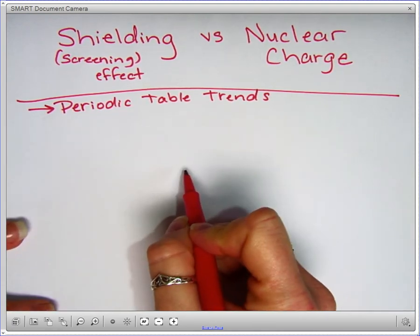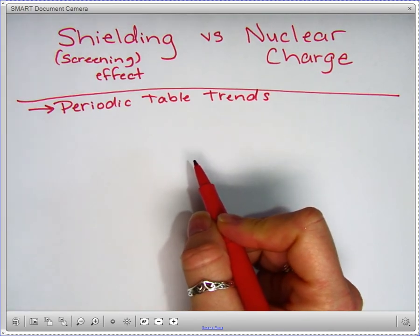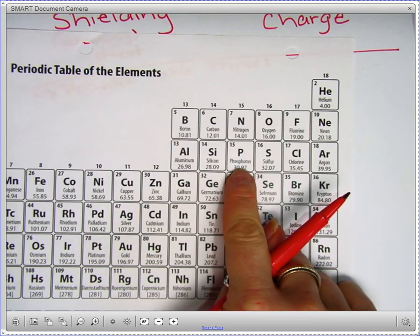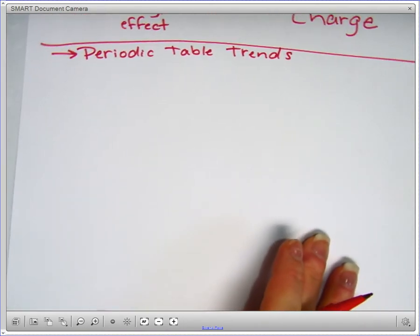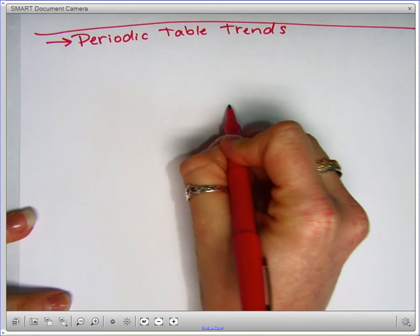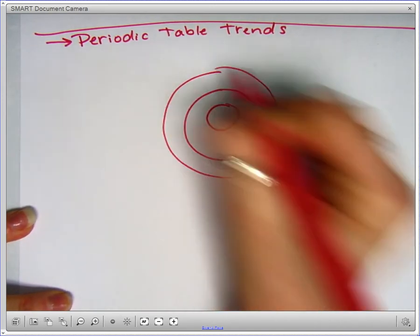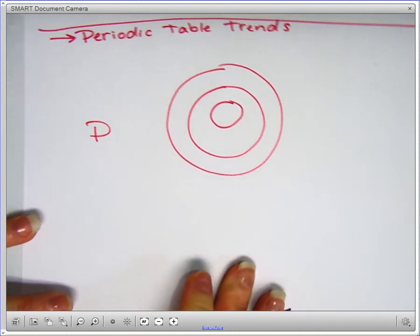So let's consider a Bohr diagram here. If we look at the Bohr diagram for phosphorus, phosphorus is in the third energy level. I'm going to go ahead and go one, two, three. So give that three rings for phosphorus.